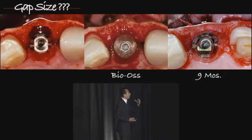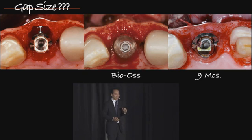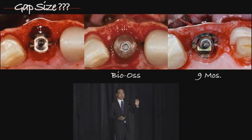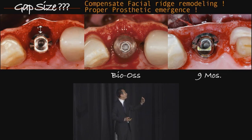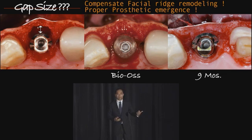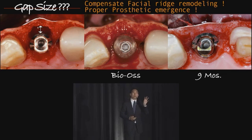What size gap should we leave? In my opinion, the key to the size of the gap is that after the inherent remodeling, we can still have enough bone to compensate for that remodeling. Furthermore, we need enough room for the prosthesis to emerge.